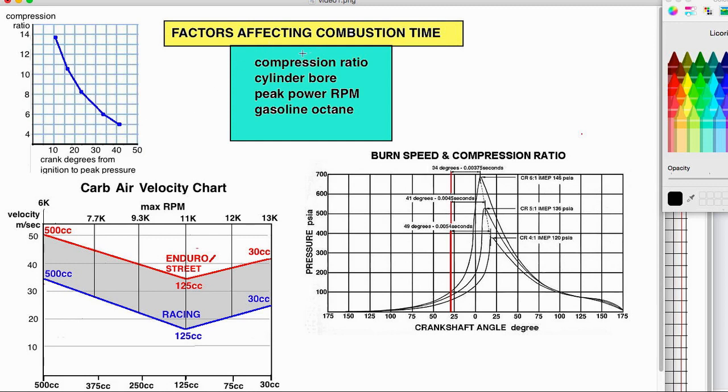The main factors affecting combustion time are compression ratio, cylinder bore, and that is because the bigger the bore, the longer it takes from the spark in the center of the combustion chamber, that flame to reach the very edge. Cylinder bore, peak power RPM. The higher the RPM, the less time there is for that flame to reach there within a certain amount of time to get maximum power.